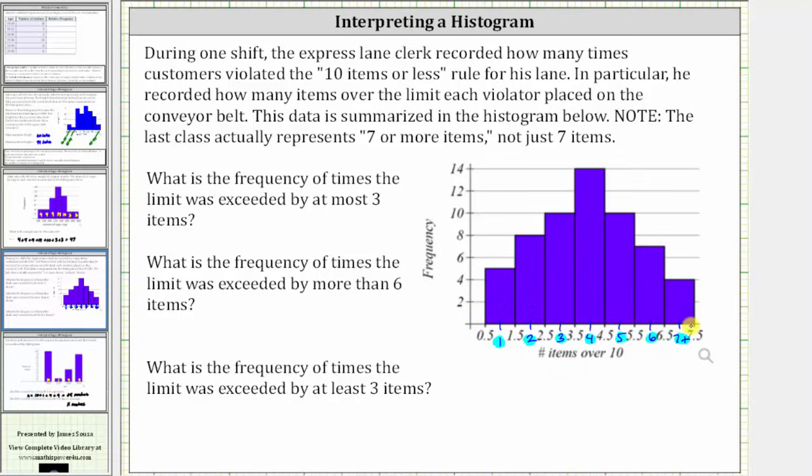Before we answer the questions, let's determine the frequency for each class or category. The frequency of one is five. The frequency of two is eight. The frequency of three is ten. The frequency of four is fourteen. The frequency of five is ten. The frequency of six is seven. And the frequency of seven or more is four.